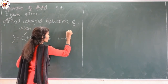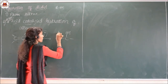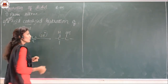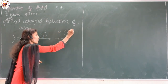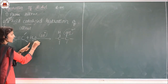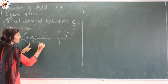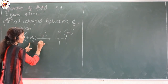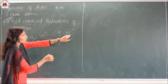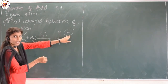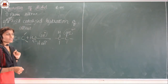OH is attached — that is the alcohol — and we are adding H₂O. H₂O consists of H plus and OH minus. So one H is added to one carbon and one OH is added to the other carbon. In this way we prepare the alcohols.